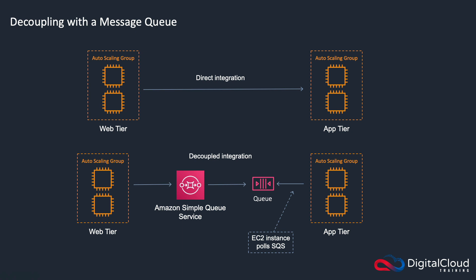Another way you can decouple your applications is using a message queue. At the top of the diagram, this shows direct integration with no decoupling — for example, an EC2 instance in an auto scaling group sending information to be processed by the application tier. So you've got your web tier and your application tier. The problem arises when the web tier receives a lot of requests and the app tier is unable to keep up with processing.